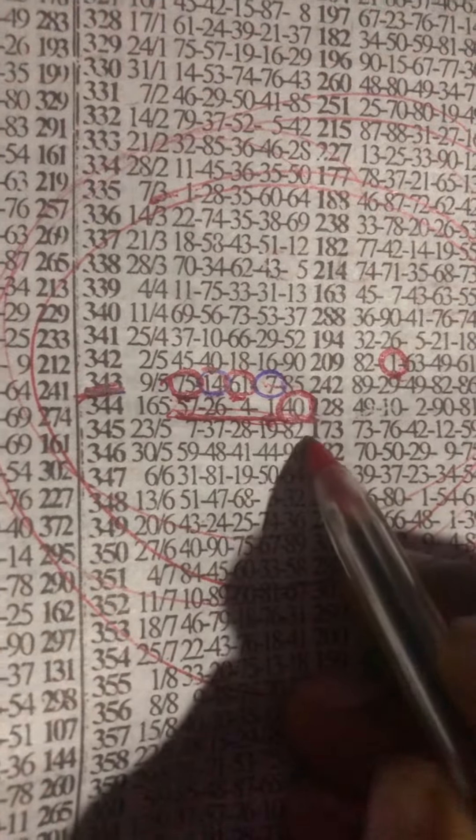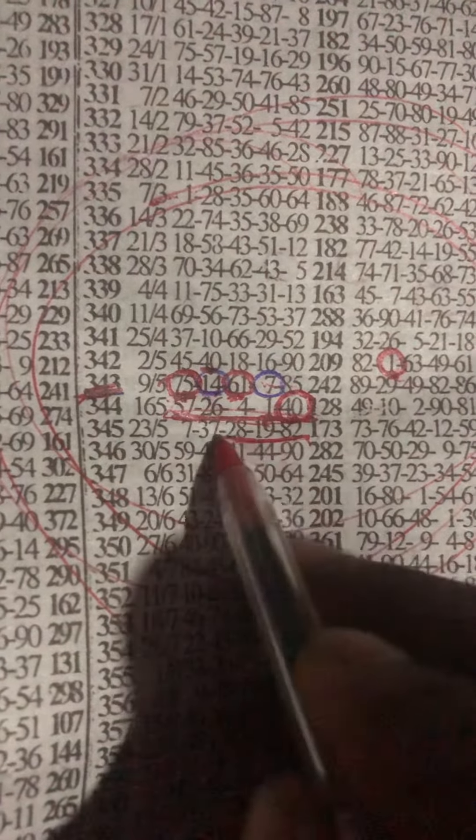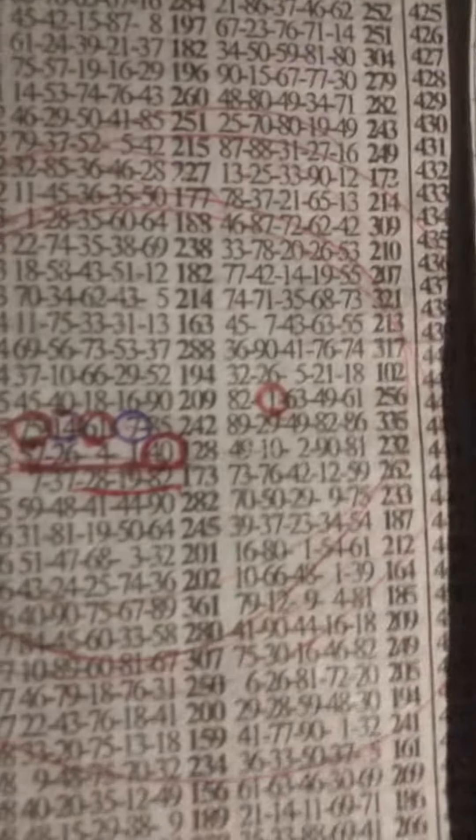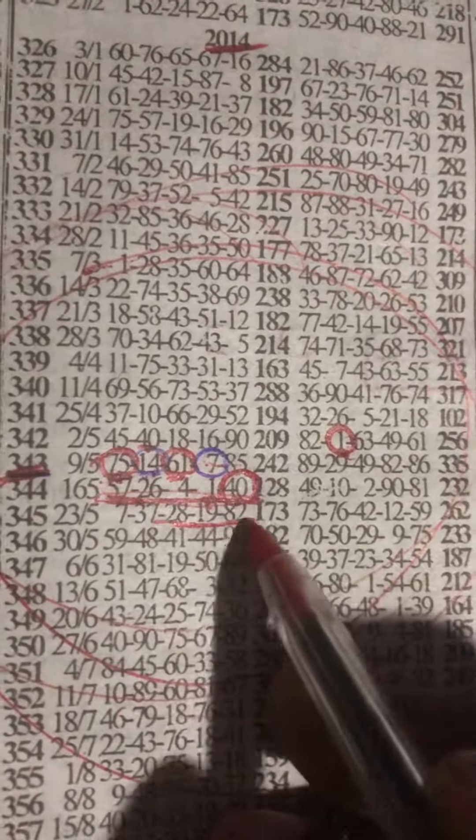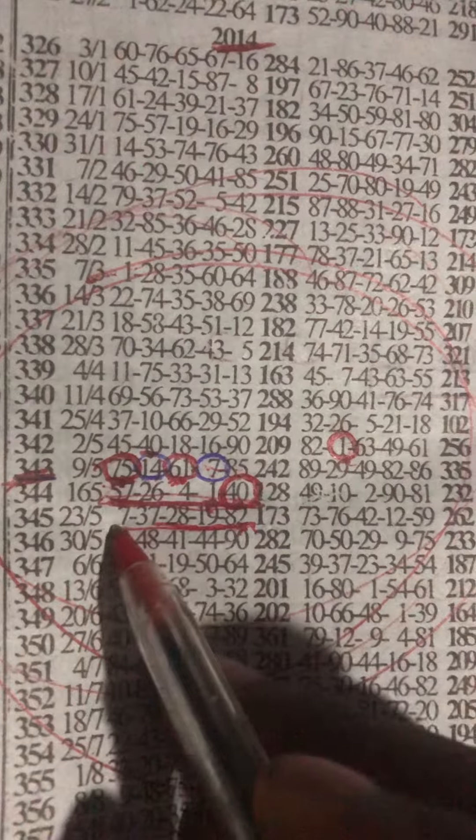So next week we'll kill this event because 40 is at last position here, okay. 40 dropped at last position here, so I believe this plan will continue for next week. Take notes, okay.